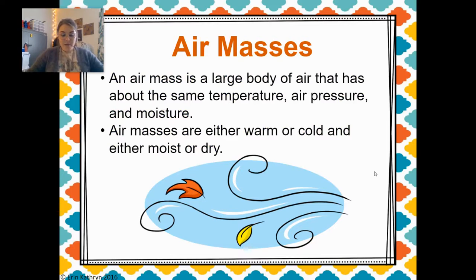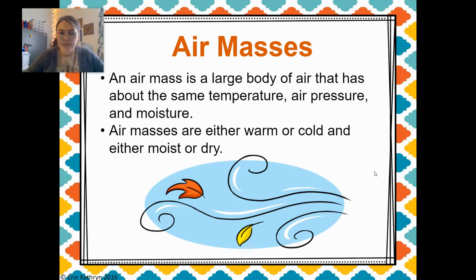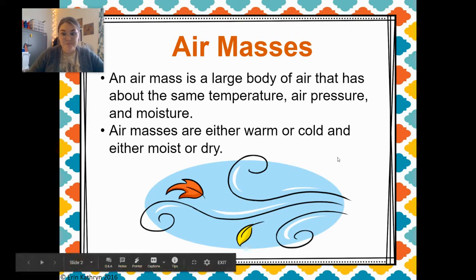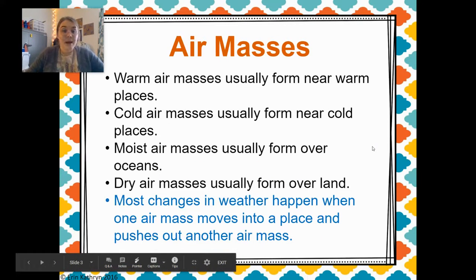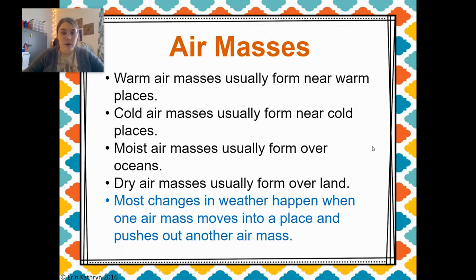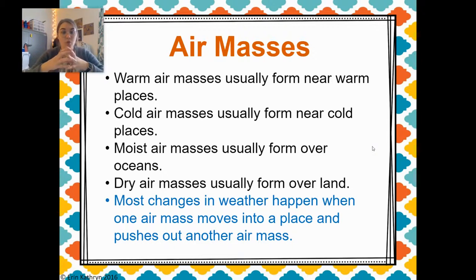Today we are going to talk about air masses. An air mass is a very large body of air that has about the same temperature, air pressure, and moisture. These air masses can be warm or cold, and they're normally moist or dry. Warm air masses usually form near warm places and cold air masses usually form near cold places, and they typically form over the ocean. Dry air masses typically form over land.